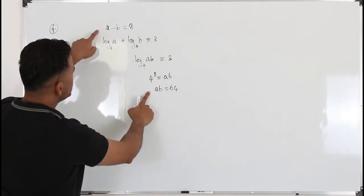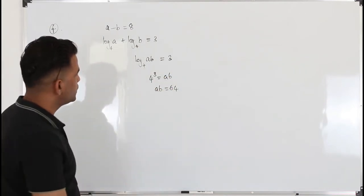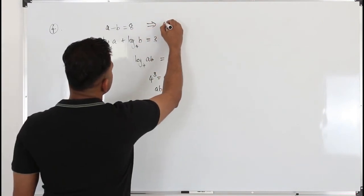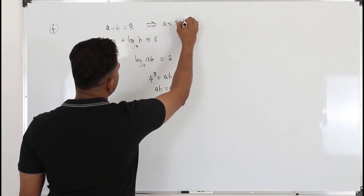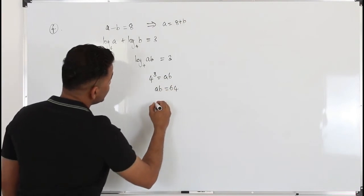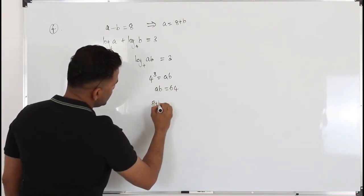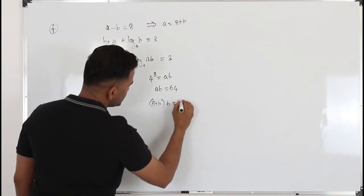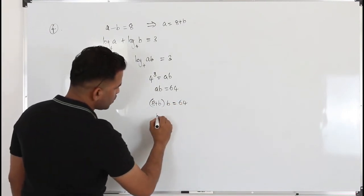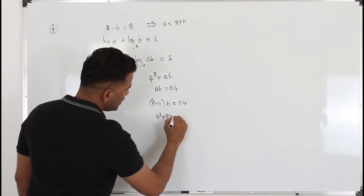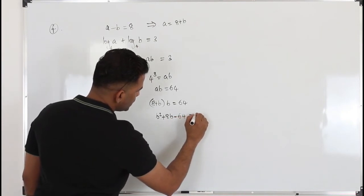You have two equations to solve the simultaneous equation. From here we can make a the subject: a equals 8 plus b. Plug in here: 8 plus b times b equals 64. So you get b squared plus 8b minus 64 equals 0.